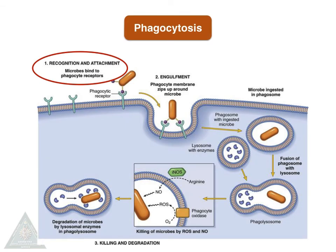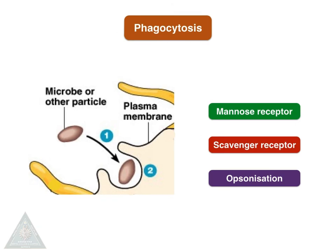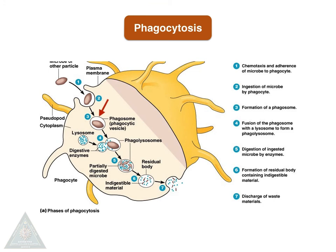Coming to phagocytosis, there are three steps in the killing of microbes. First is recognition and attachment of the microbes. Second is engulfment through endocytosis. Third is killing and degradation by reactive oxygen species and oxygen-dependent mechanisms. Microbes are recognized by three receptors: mannose receptors, scavenger receptors, and opsonin receptors. They are then endocytosed, forming a phagosome — a phagocytic vesicle — which fuses to form a phagolysosome. The microbes are killed by reactive oxygen species-dependent mechanisms, and residual bodies are expelled.